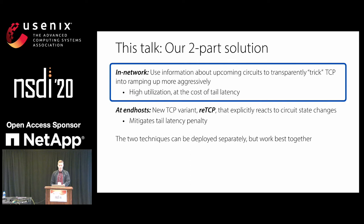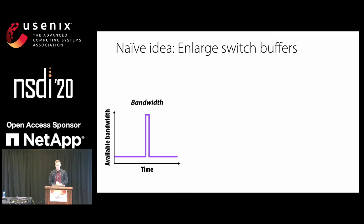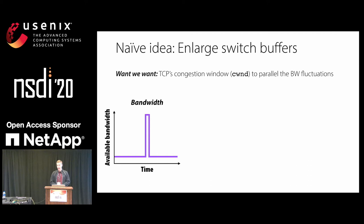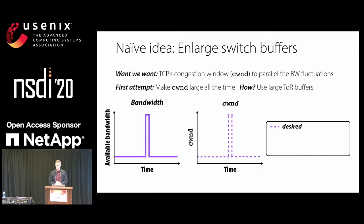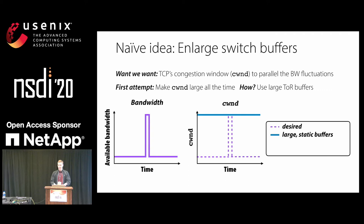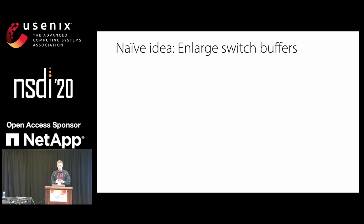Let's start with our first technique. Looking at the available bandwidth graph for one circuit, ideally we'd have TCP's congestion window parallel the shape of the bandwidth line. The first step is to simply make the congestion window bigger all the time by increasing network buffer sizes. This increases outstanding data when the circuit comes up, but as we all know, increasing buffer size incurs a latency penalty.